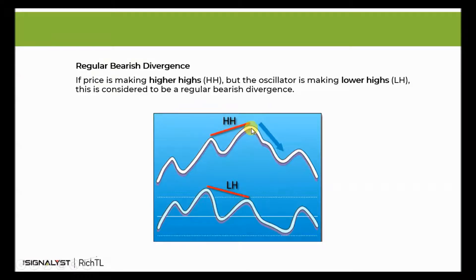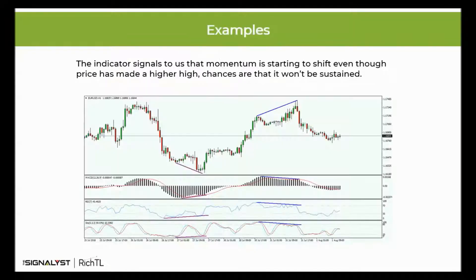If price is making higher highs but the indicator is making lower highs, then you have a regular bearish divergence. This type of divergence can be found in an uptrend. After price makes a second high, if the indicator makes a lower high, then you can probably expect price to reverse and drop. As we know so far, the regular divergence is best used when you are looking for reversal setups.